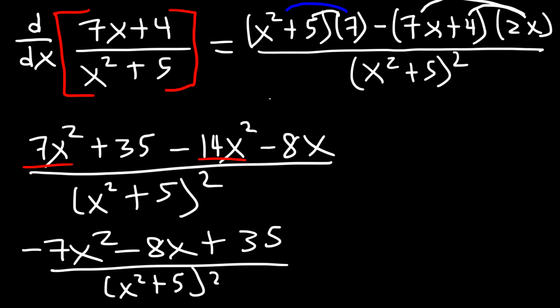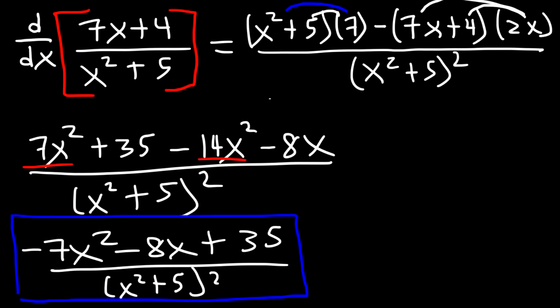So we have negative 7x squared minus 8x plus 35, divided by x squared plus 5 squared. And that is the answer to the problem. That's how you use the quotient rule to find the derivative of expressions in the form of a fraction.